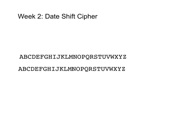We need something a little bit more sophisticated. The date shift cipher works by having a lot of different Caesar shifts in one. First we need to agree on a special date. I'm going to use Isaac Newton's birthday, which is the 25th of December — so I'll just use 2512.